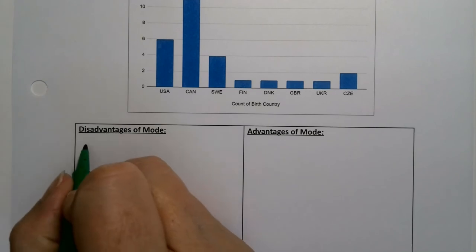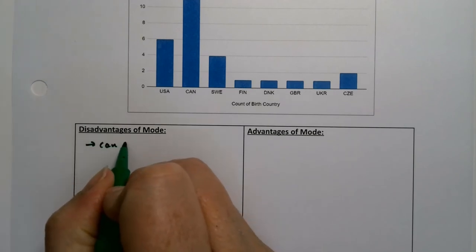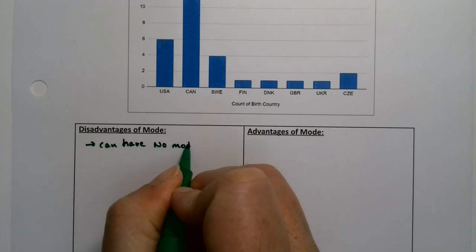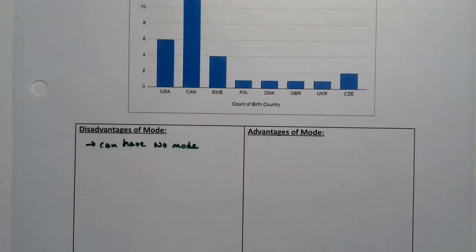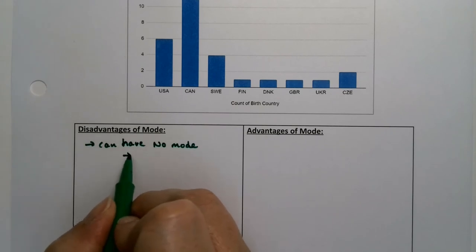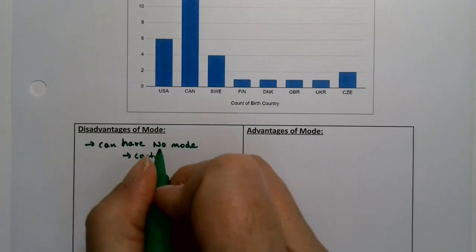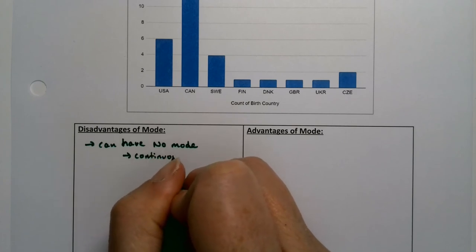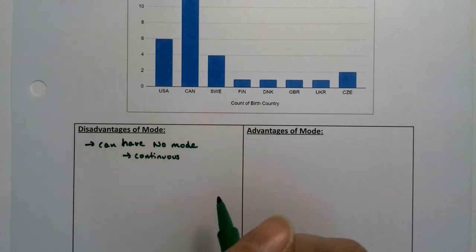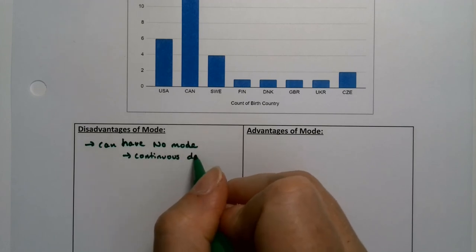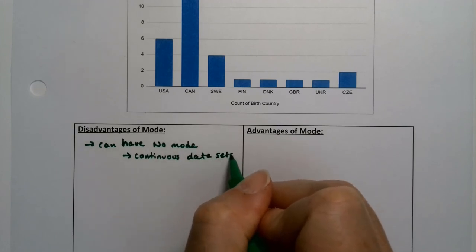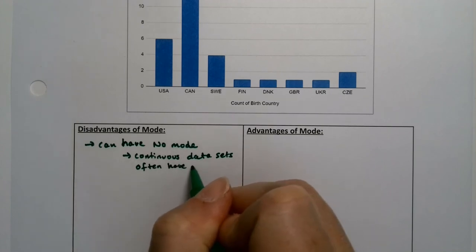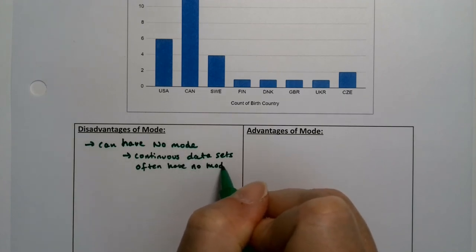So you can have no mode. It is possible. Matter of fact, it happens pretty frequently with continuous data sets, for example. Continuous data sets generally have no mode because there's decimal places, and so no two are going to be exactly alike.